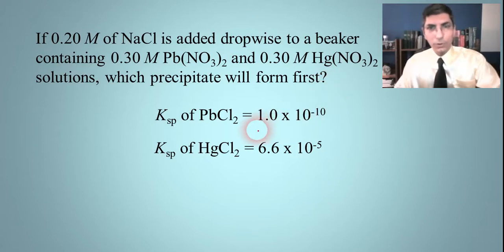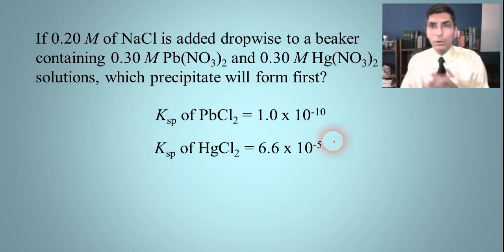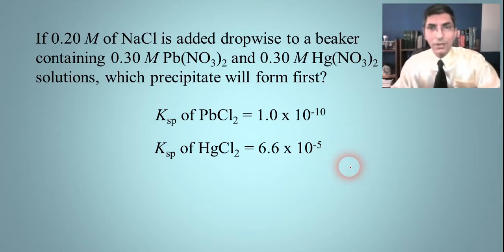So it's got 0.3 molar lead(II) nitrate and 0.3 molar mercury nitrate. Which of the precipitates is going to form first? What we have to do here is look at the KSP values and compare them to each other. Remember, the substance that has the smaller, the tinier magnitude KSP is the one that's least soluble, and it's going to precipitate out first.